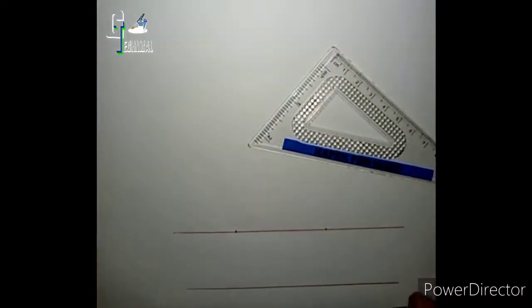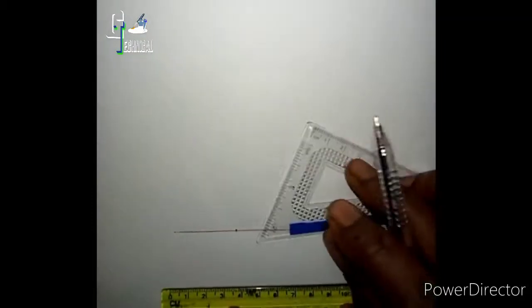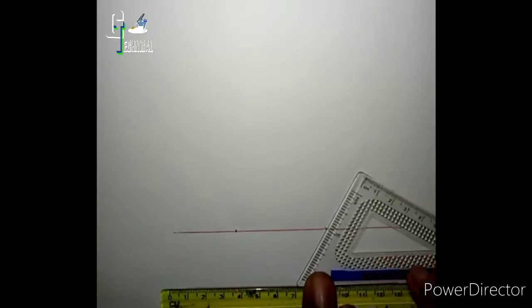I'll do another line so you can see. So now I'll place my ruler in this one. I'll take this, 62 degrees. I'll draw the line.